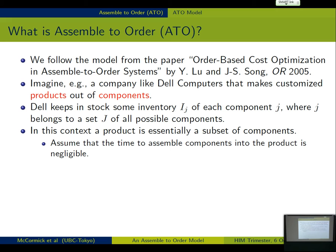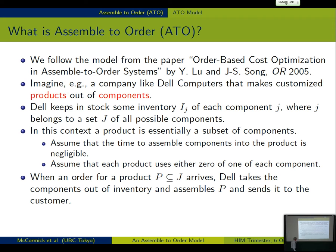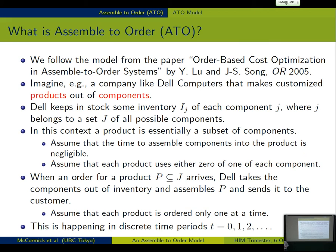And so we're going to assume the time to assemble is negligible, make the simplifying assumption that each product uses either zero or one. So when an order for a product arrives, Dell is going to take the components out of inventory, and it's going to assemble them and then send them in an assembled order way to the customer. Very nice. Okay, so we're assuming that each product is only ordered one at a time. This is happening in discrete time periods.